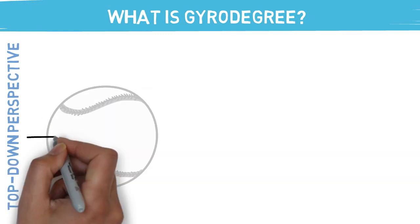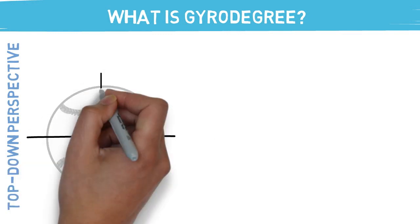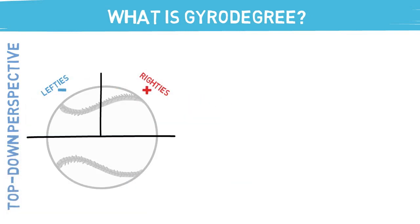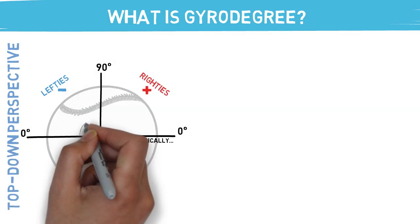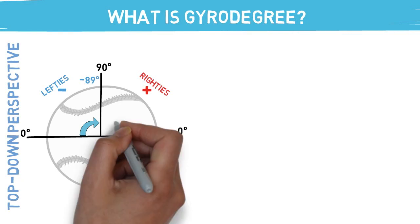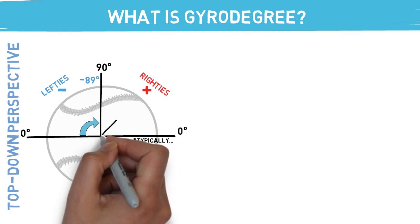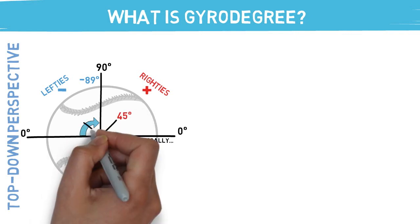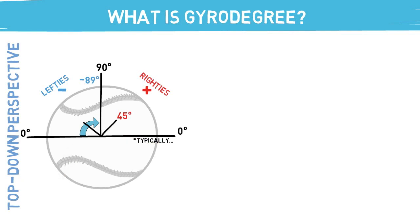After you've grasped that idea, let's talk about how this number is usually displayed. Every pitch has a gyro degree, measured in degrees, as you'd imagine. It's measured on a scale of 0 to 90 for righties. Lefties then fall on the typical scale of 0 to negative 89, meaning that lefties' numbers are almost always negative. A pitch rotating around this axis from our bird's eye view perspective would have a gyro degree of 45 degrees. For a lefty, a pitch with similar movement characteristics would have a gyro degree of negative 45 degrees.